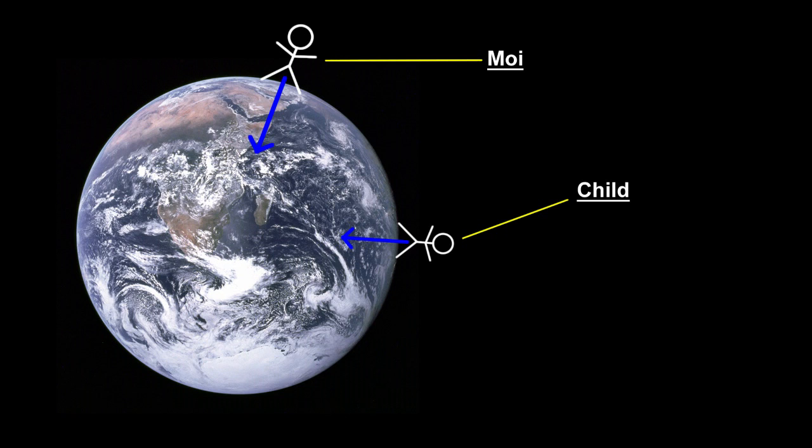On the other hand, if the child and I are in different places on the earth's surface, our vector lines will not be parallel.